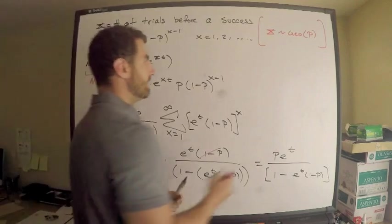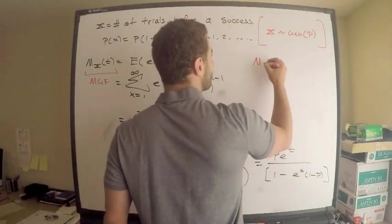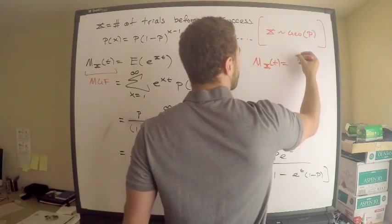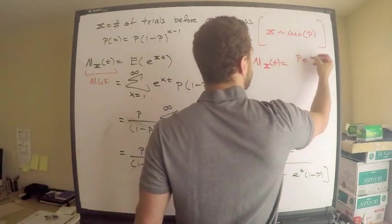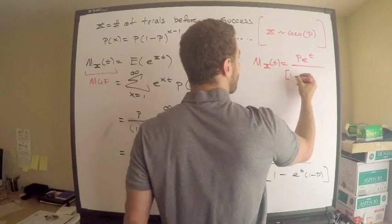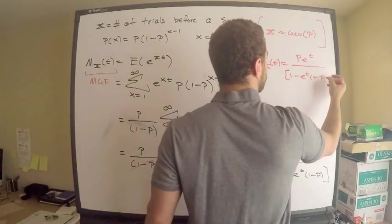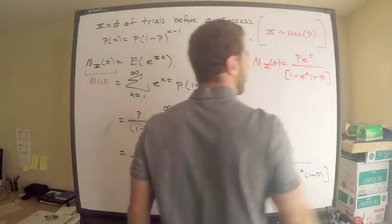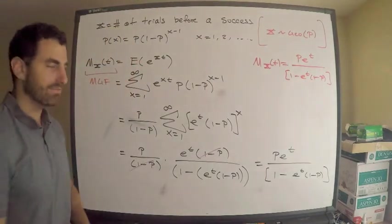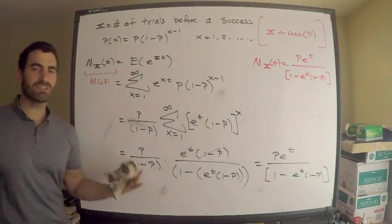And what I get is the moment generating function for the geometric random variable, which I described above. Let me record my information right here. The moment generating function of X is equal to p times e to the t, divided by 1 minus e to the t times 1 minus p.